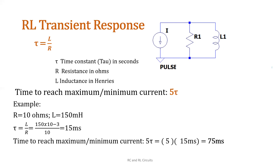If the question is asking for the time to reach both maximum and minimum current, that would be 75 ms times 2. Keep in mind this 75 ms is a one-way measurement — maximum or minimum current. So the time to reach maximum or minimum current is 75 ms.